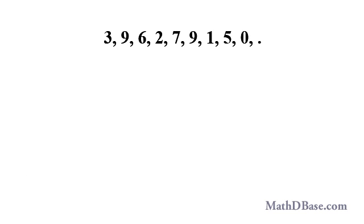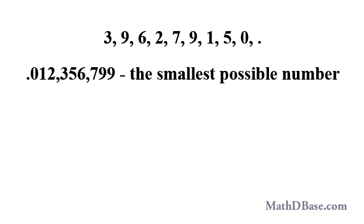If we are given the 9 digits 3, 9, 6, 2, 7, 9, 1, 5, 0, and a decimal point, and asked to write the smallest possible number using only these 9 digits once, the procedure is similar to what we used in Part 1 for whole numbers.